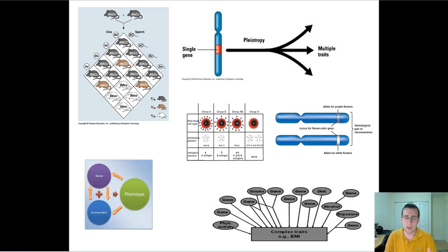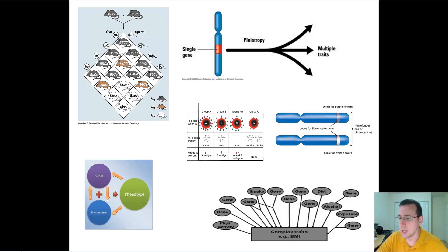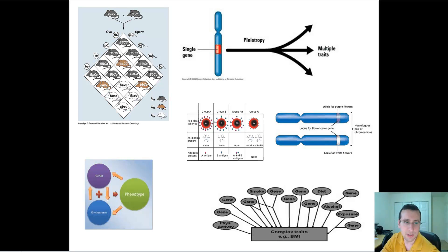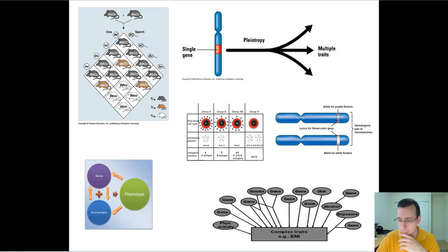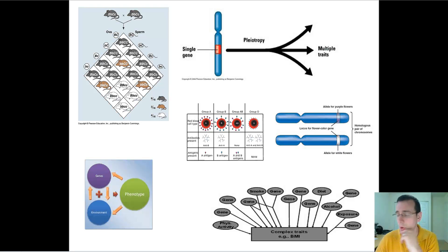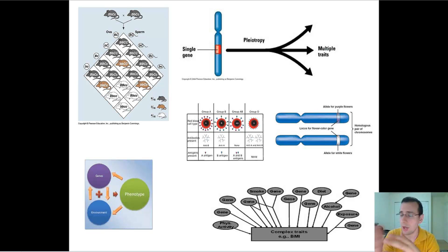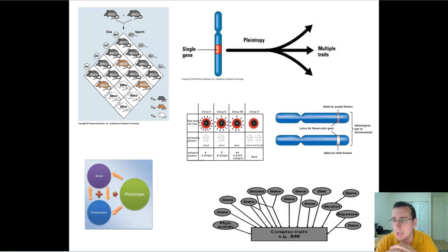Likewise, when there's pleiotropy, it's going to be hard for selection to act against that gene because it plays many roles. So even if it's bad in one way, it may be good in many other ways, and that's going to preserve variation in the population. Sometimes the environment changes how a trait is expressed, making it hard for selection to act against a gene that isn't even being shown if the environment is deactivating it. You're also going to have maintained variation through processes like epistasis, where genes depend on each other, so you can't select against a gene that another gene depends on — selection is slowed down.